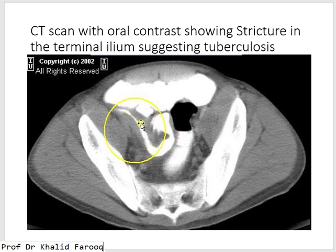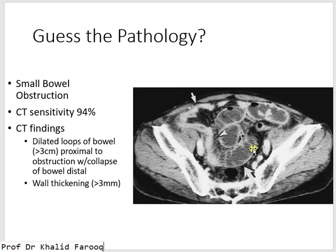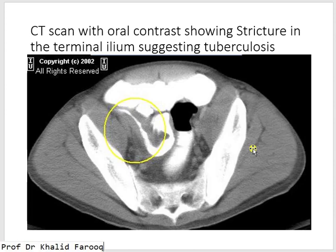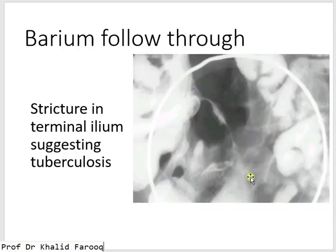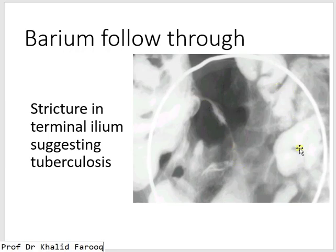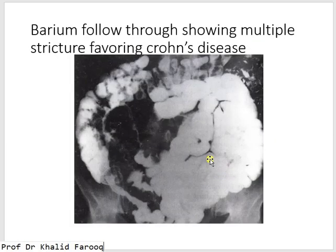Another CT example shows oral contrast within the small intestine, with the terminal portion showing a stricture with thickened surrounding walls — another example of ileal or ileocecal tuberculosis leading to intestinal obstruction. On barium follow-through examination, a tight stricture involves the terminal ileum, with the cecum and proximal small intestine visible. This stricture leads to hold-up of contrast in the proximal small intestine, and the etiology is tuberculosis.